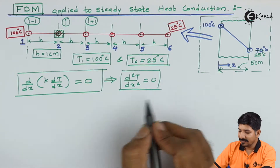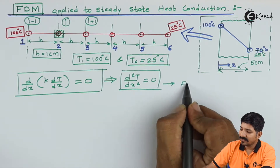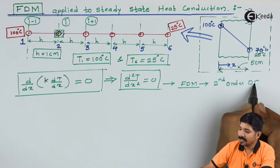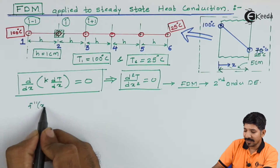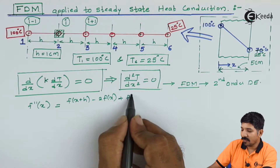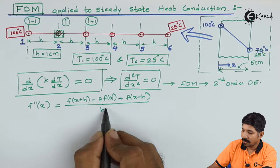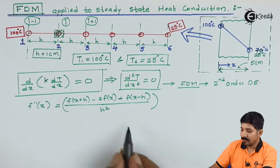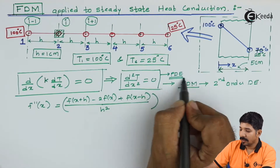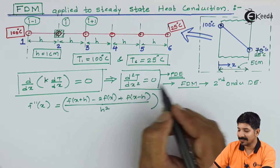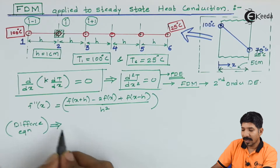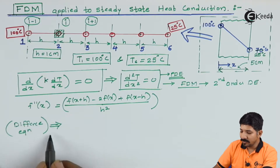We can use the FDM method as we have seen — we can write down the finite difference method for the second order differential equation. We have seen that F double dash of x can be written as F(x+h) minus 2F(x) plus F(x-h) all divided by h squared. We can use this equation to express d²T/dx², converting the PDE into an algebraic difference equation using the FDM method.